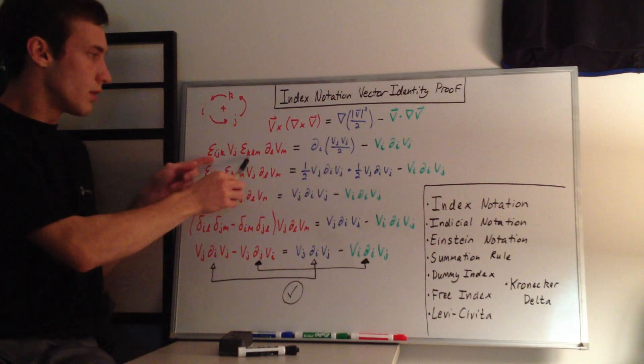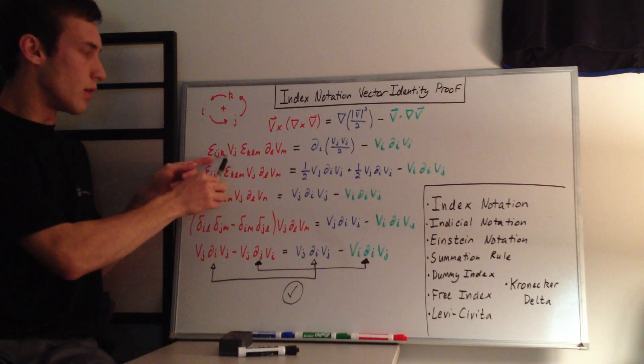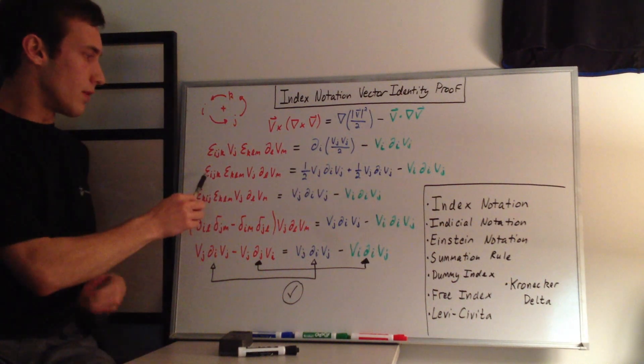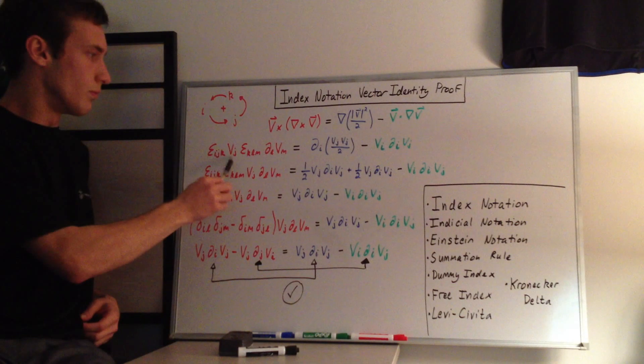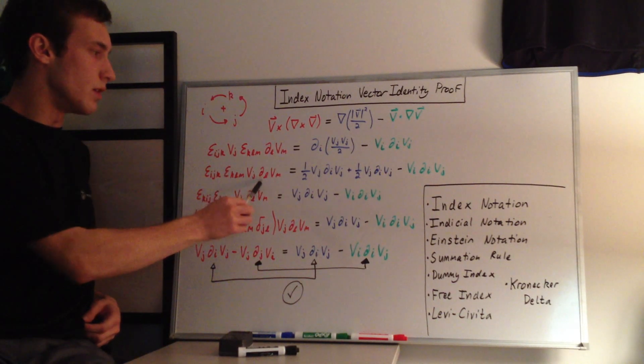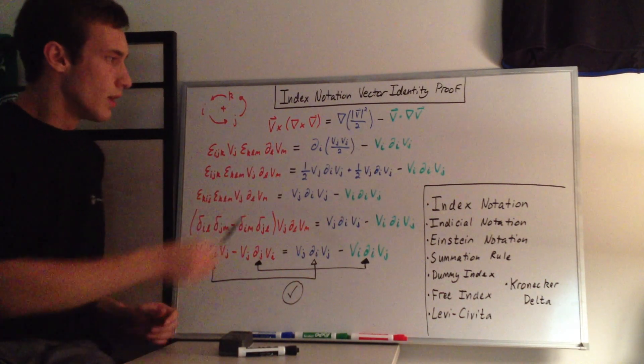Okay. Here I'm just moving this operator out here. So now I have epsilon_ijk, epsilon_kln, and then this is now moved over here. So we have v_j, d_l, v_m.